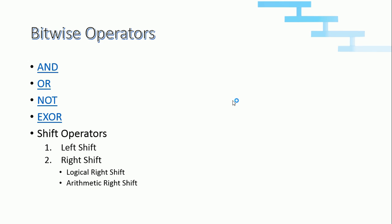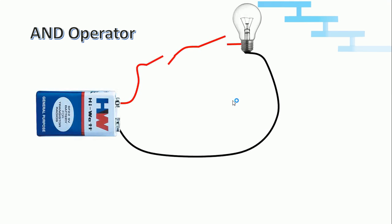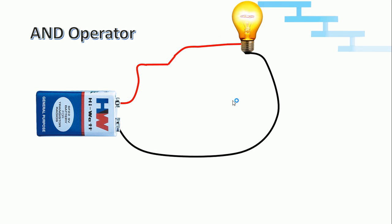First we will see about AND. Before explaining the truth table, we will see how AND works with a circuit. When the circuit is closed the bulb will glow; if the circuit is open, the bulb will be off. Bulb on = 1, bulb off = 0, switch on = 1, switch off = 0. When only the first switch is on, the bulb is not glowing — so for input 1 and 0, the result is 0. When both switches are on, the circuit is closed and the bulb glows — so for input 1 and 1, we get output 1. AND operator: if both inputs are 1, output is 1; if any input is 0, output is 0.